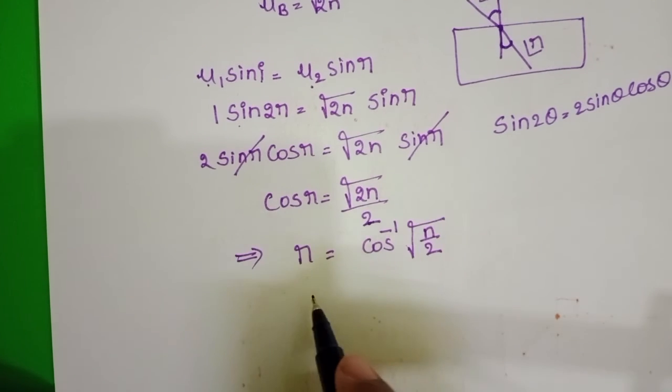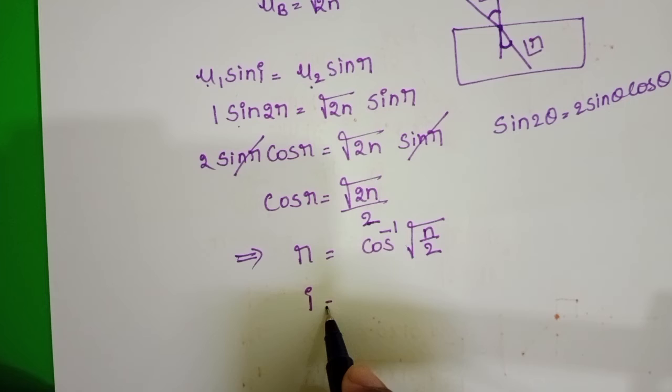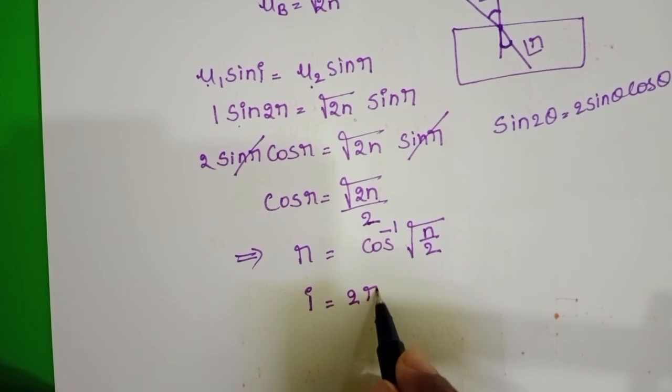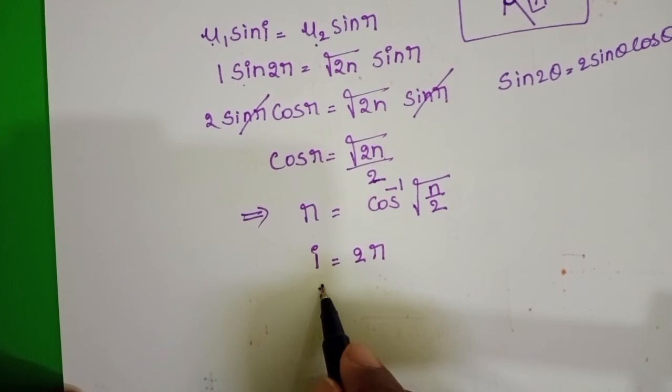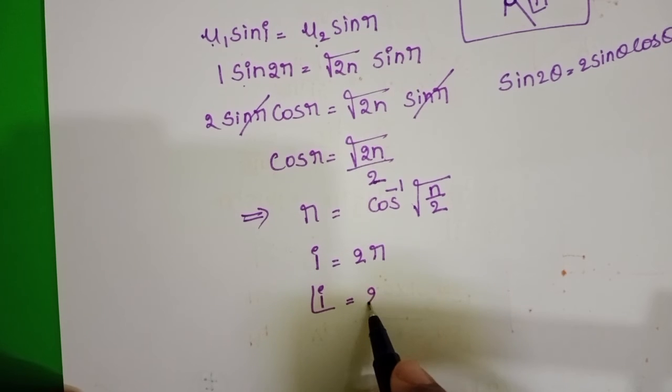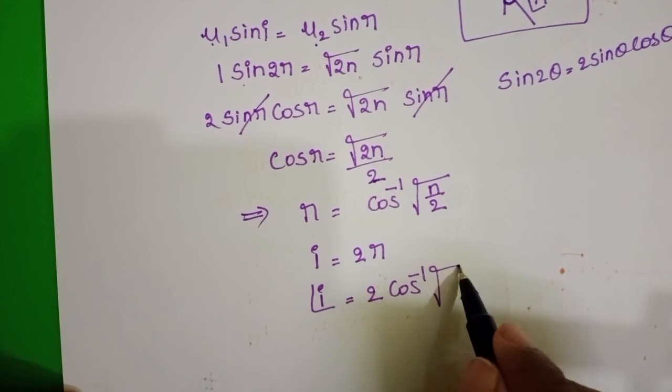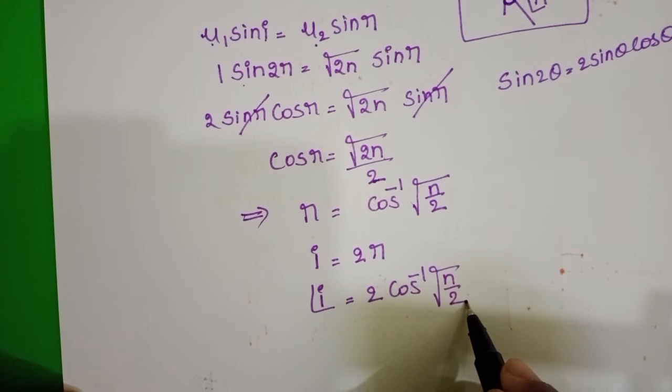But we want angle of incidence. Since i = 2r, the angle of incidence is i = 2 cos⁻¹(√(n/2)).